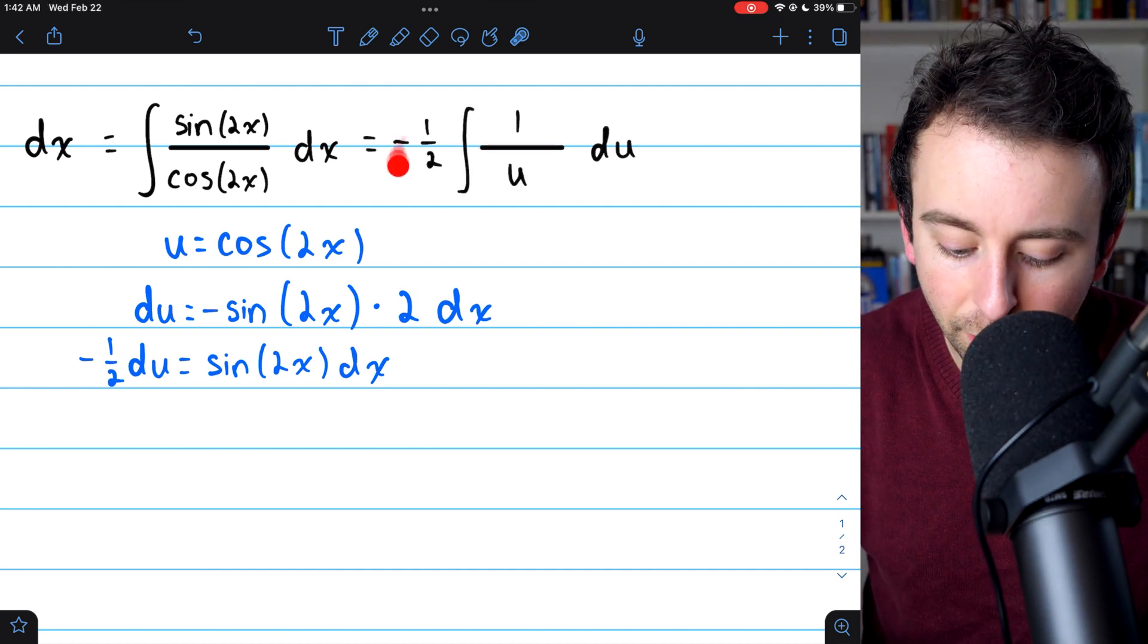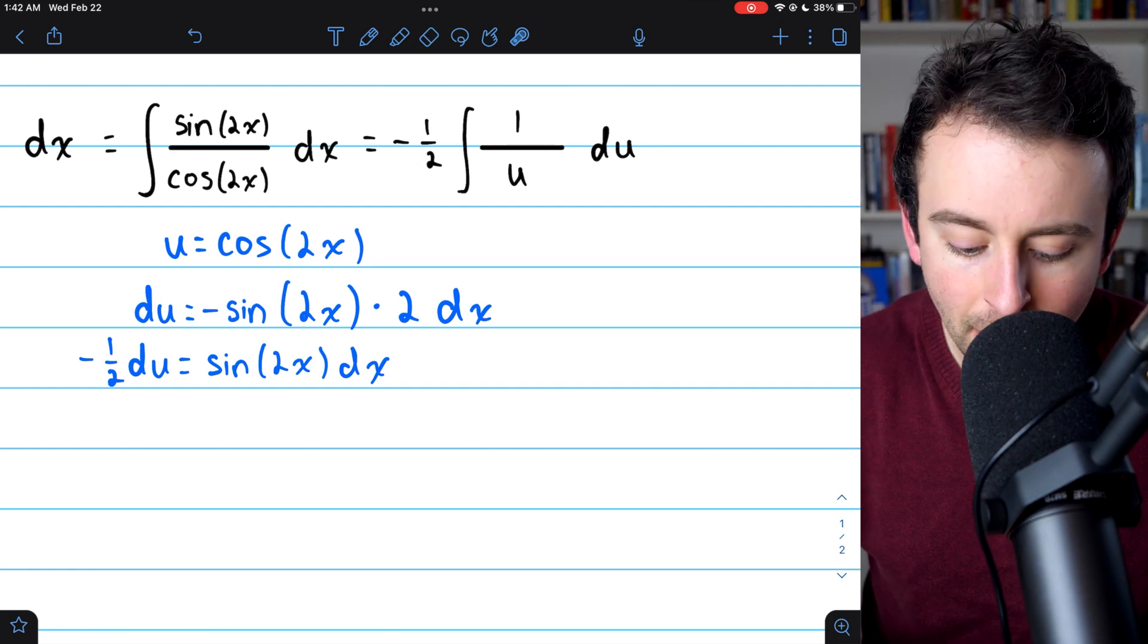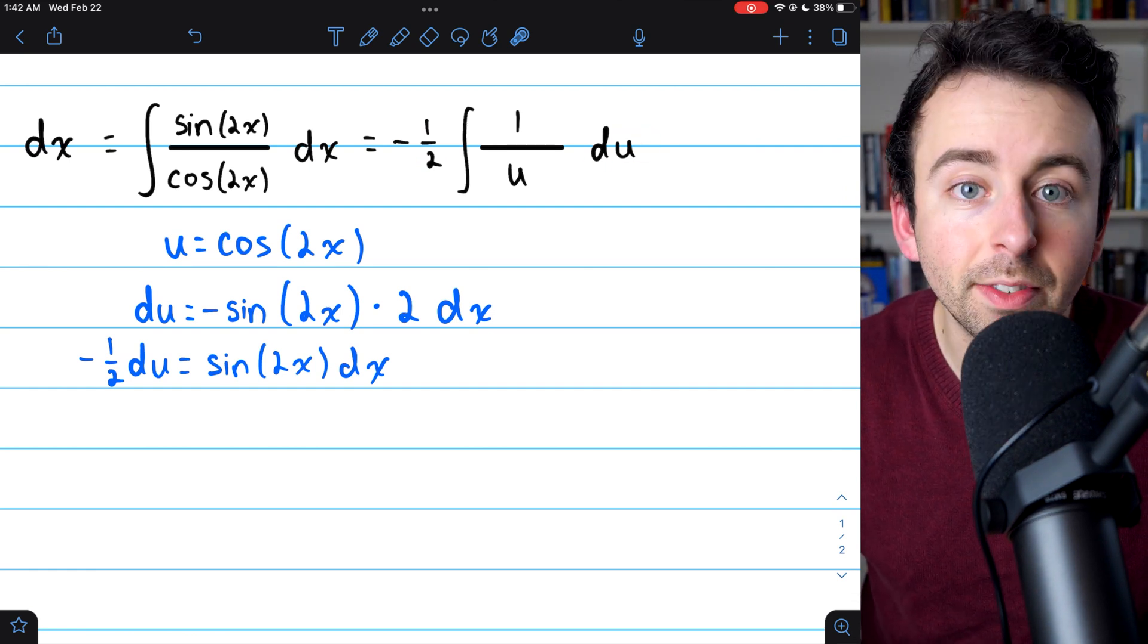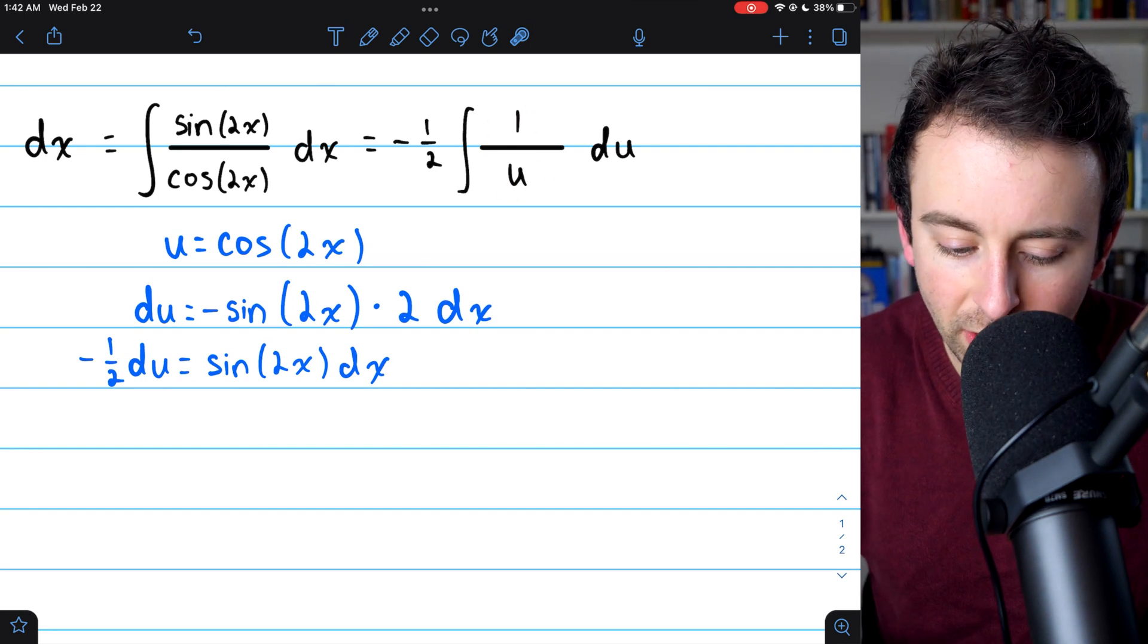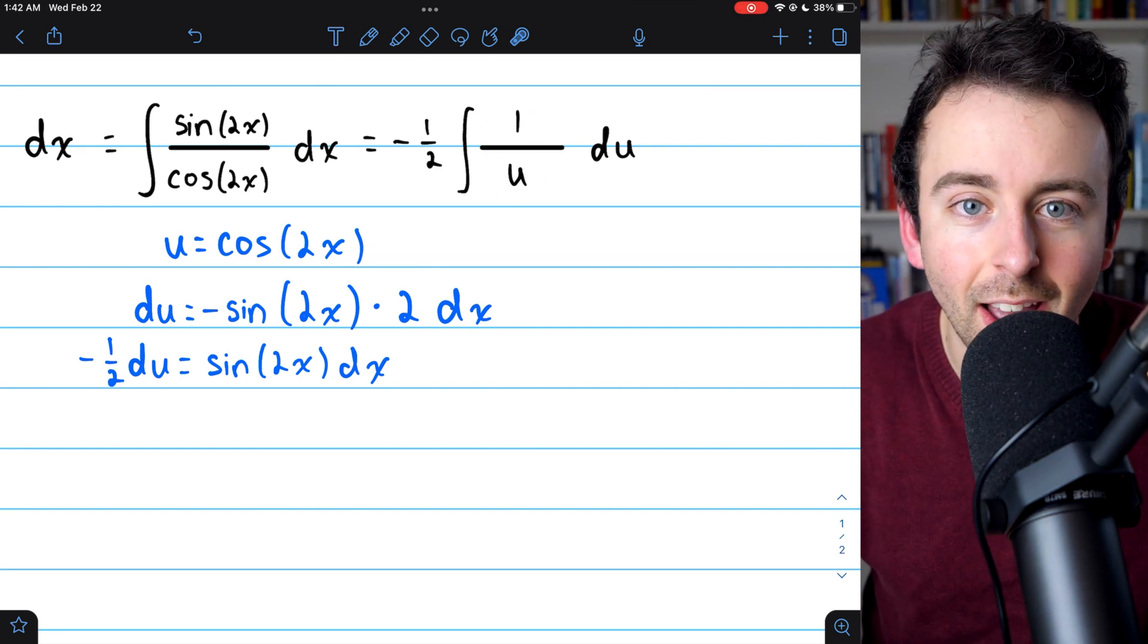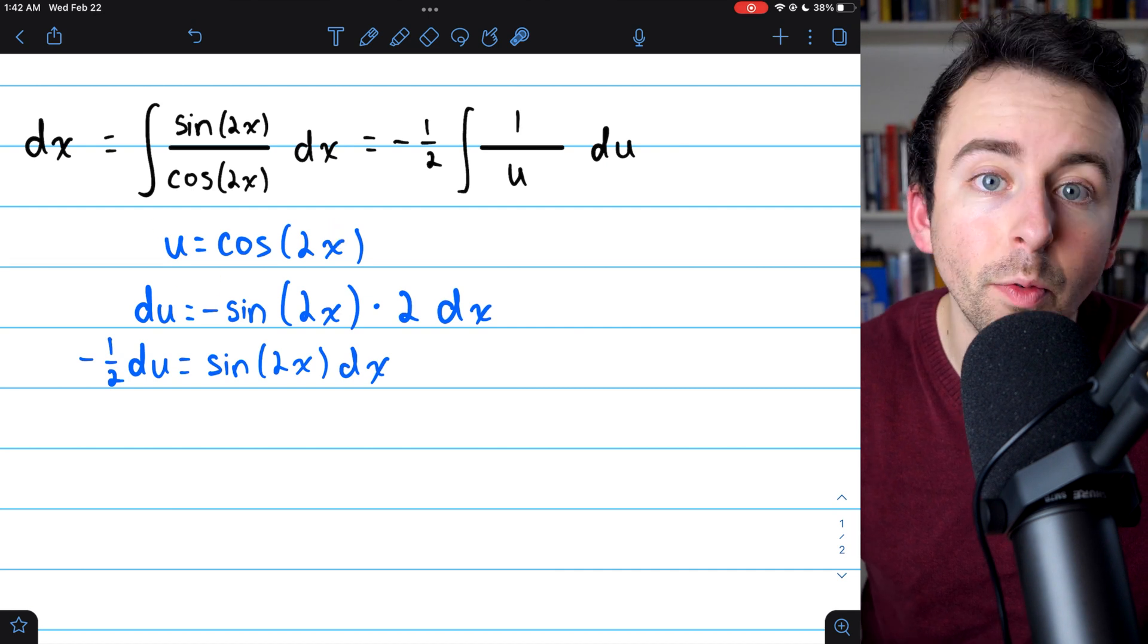And there we go. I brought the negative one-half out in front of the integral, and I just wrote the du off to the side. So we can really focus on the main character here, which is the 1 over cosine, which is now 1 over u.